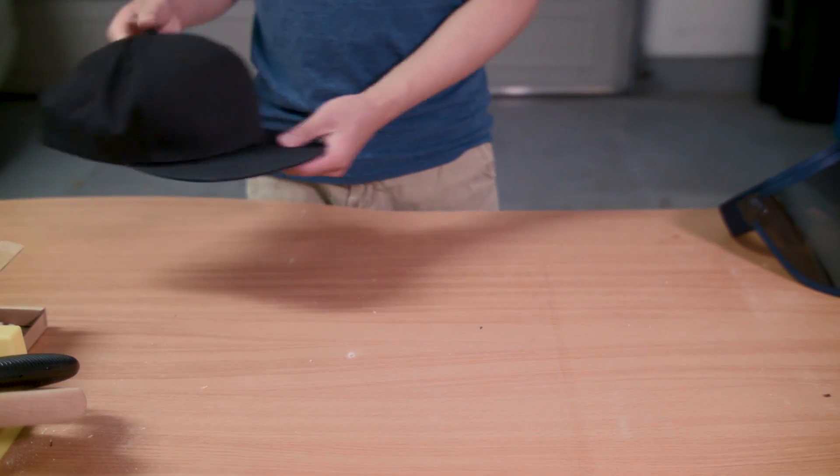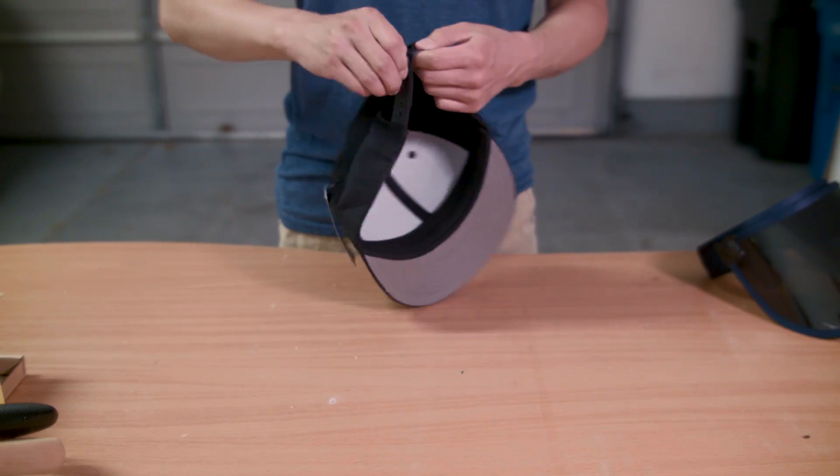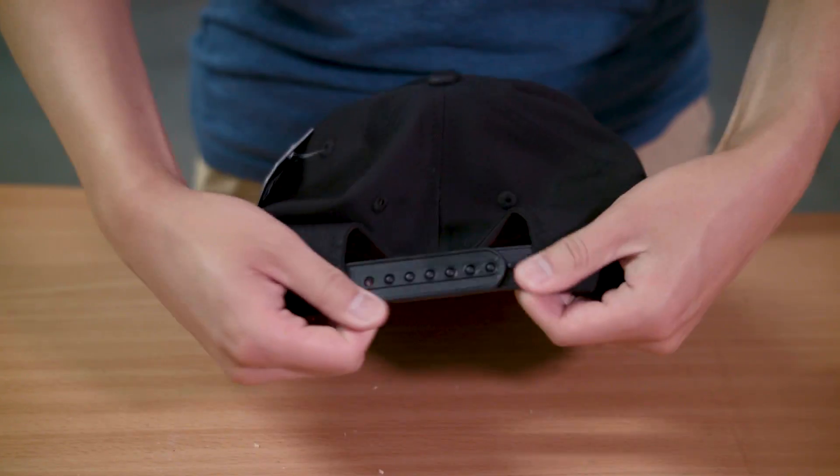First off, you'll need to get a hat with a large front face. This makes it easier to mount the display. We're using this black snapback.